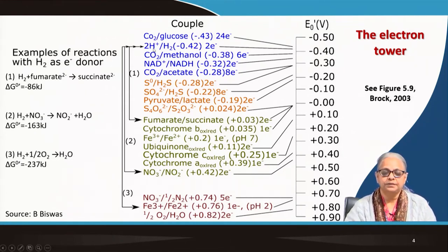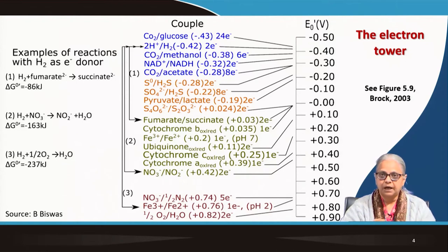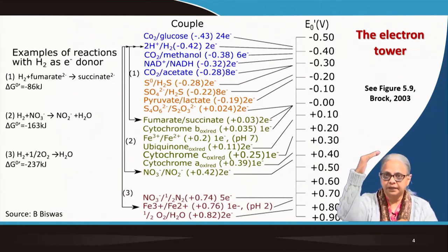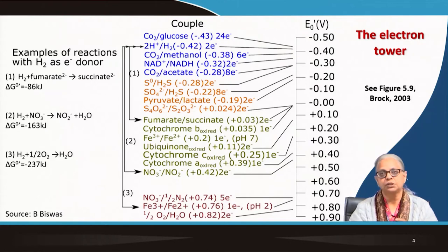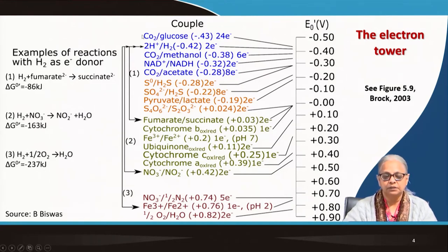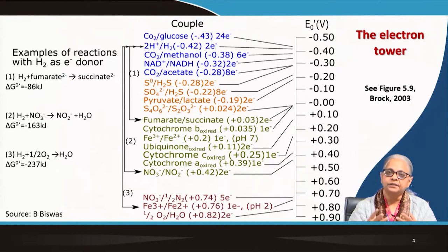What is important to note is that electrons released from the top of the tower are caught by the electron acceptors at the bottom. The greater the fall of electrons, the greater the amount of energy released in terms of electrical potential, which can then be converted to chemical energy in the form of ATP. The greatest distance is from glucose to oxygen.